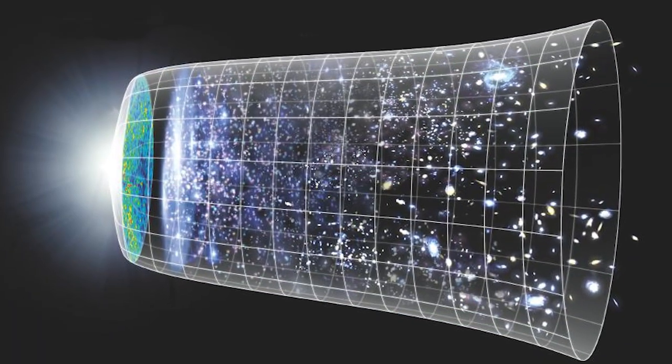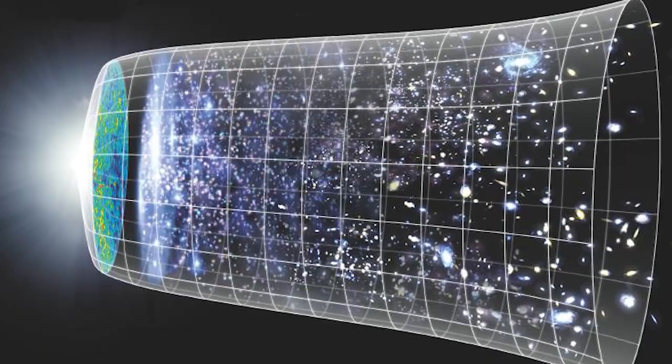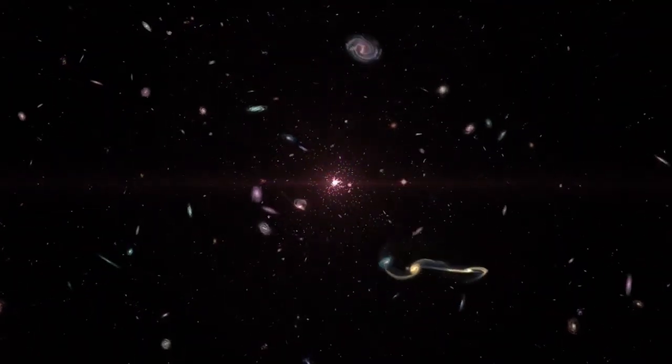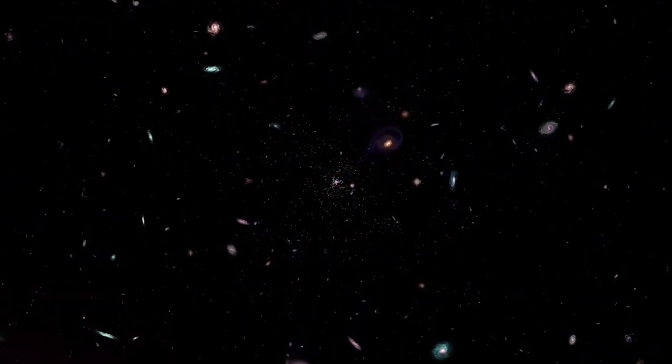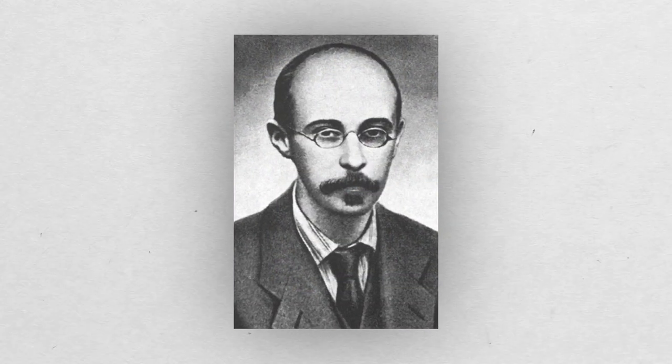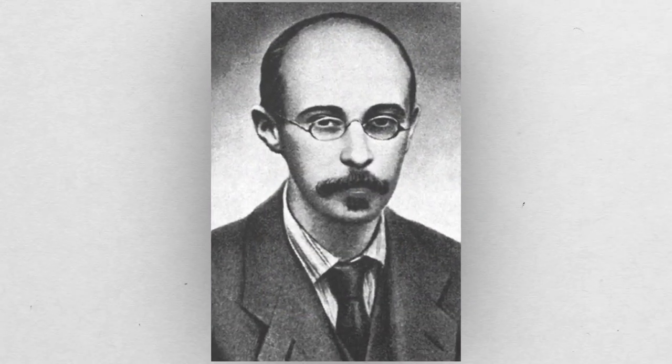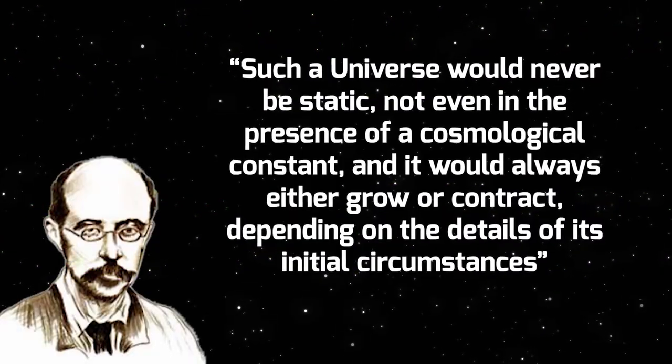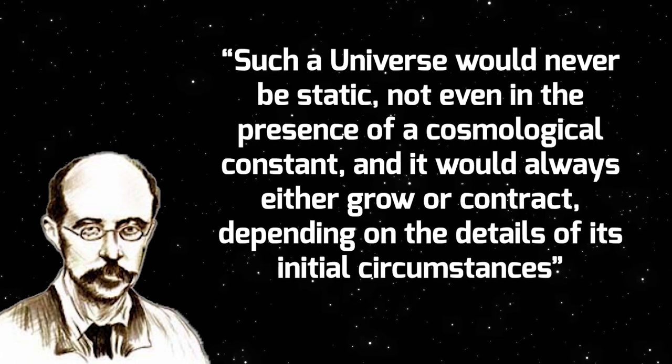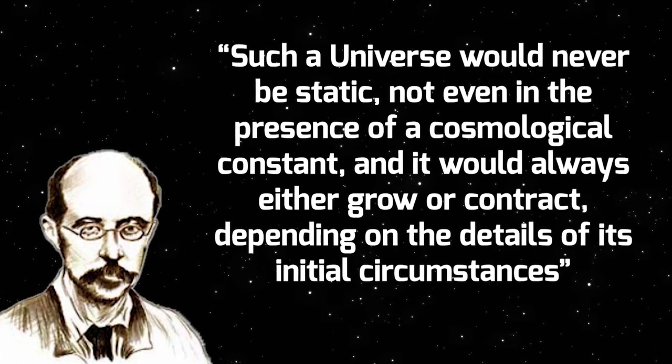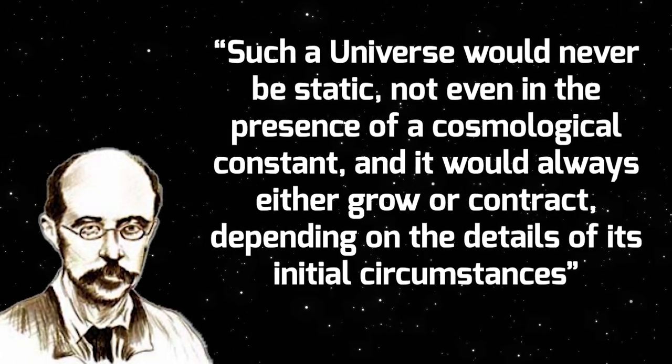The equations governing the universe that was homogeneously, the same in all places, and isotropically, the same in all directions, filled with any kind of matter, radiation, or any form of energy, were fully developed by Alexander Friedman in 1922. According to his research, such a universe would never be static, not even in the presence of a cosmological constant, and it would always either grow or contract, depending on the details of its initial circumstances.